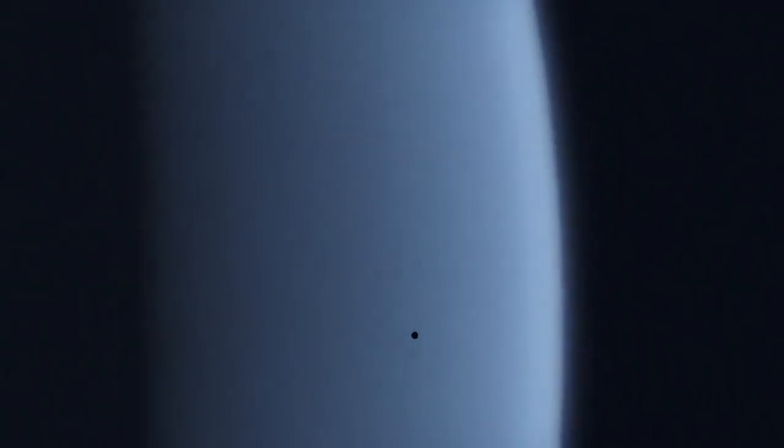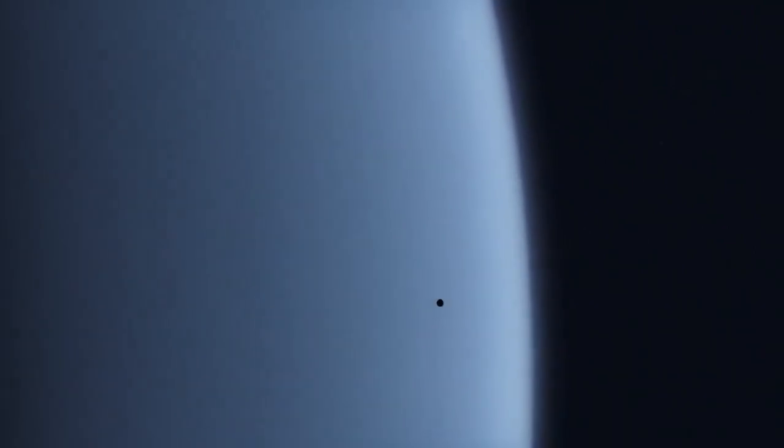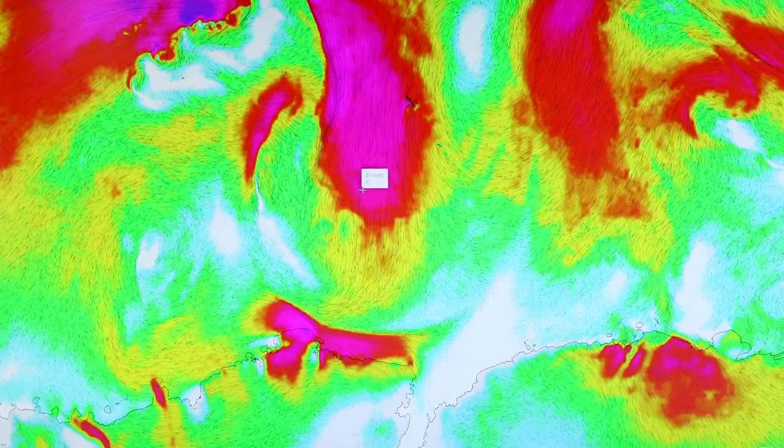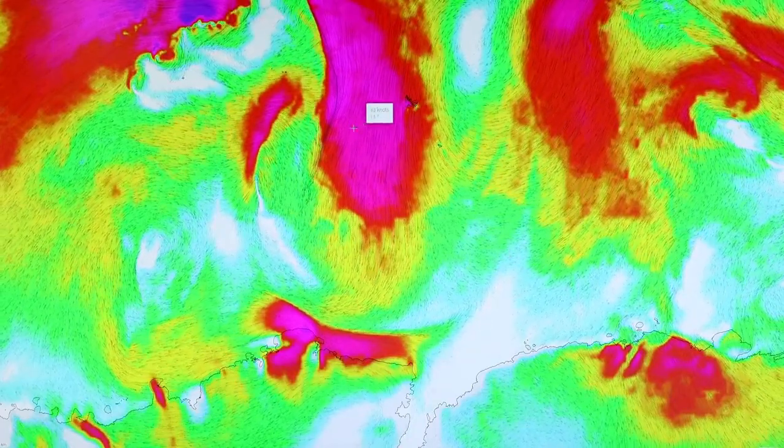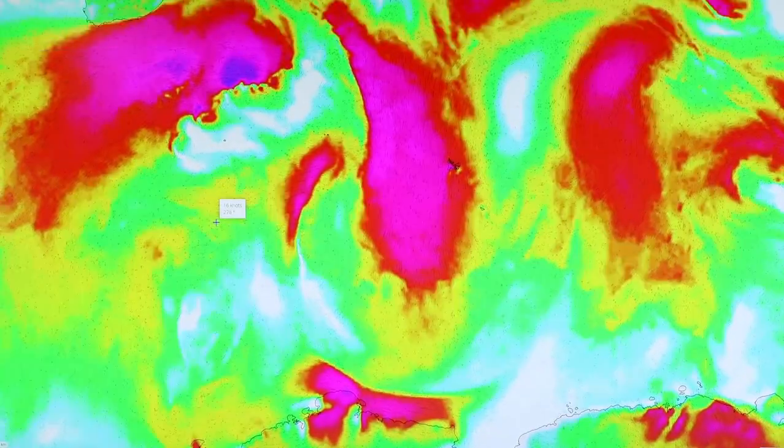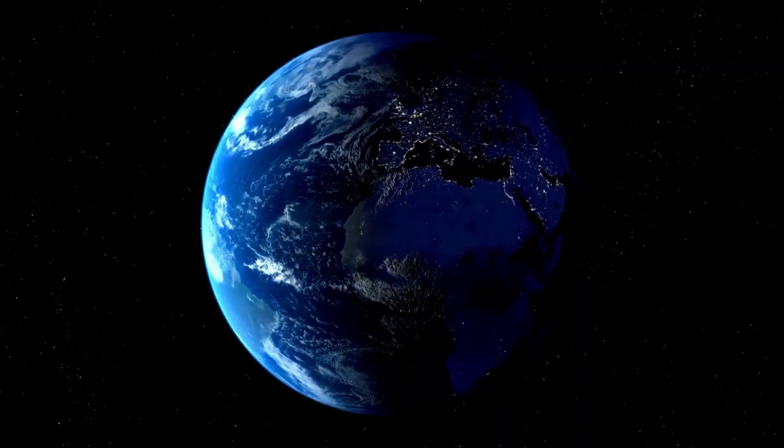Superionic ice has long been speculated to exist in the interiors of ice giants, but Webb's observations indicate that it might not be confined neatly. Rather, it might be distributed throughout Neptune's interior in turbulent, unstable areas, actively shaping magnetic and thermal activity on the planet.